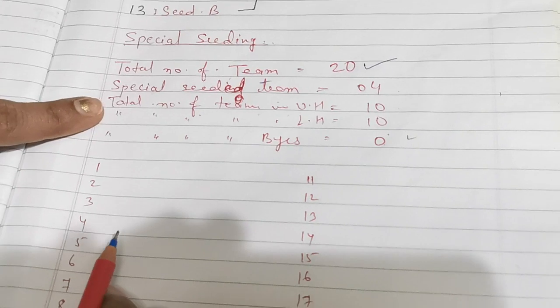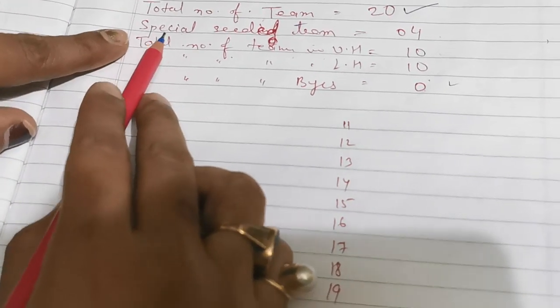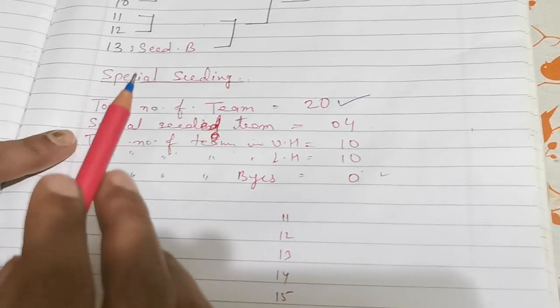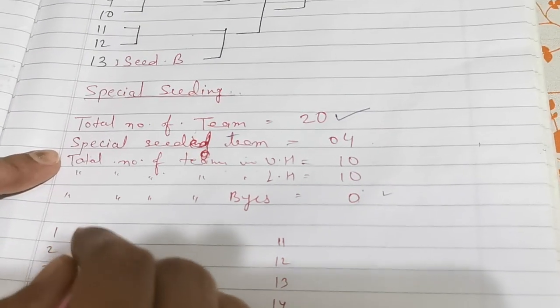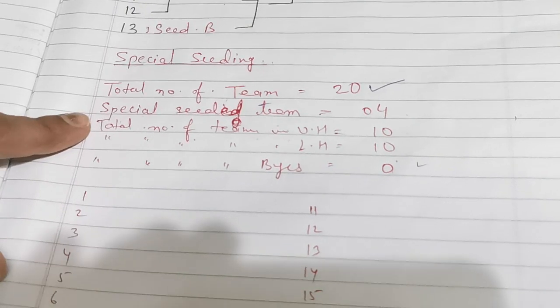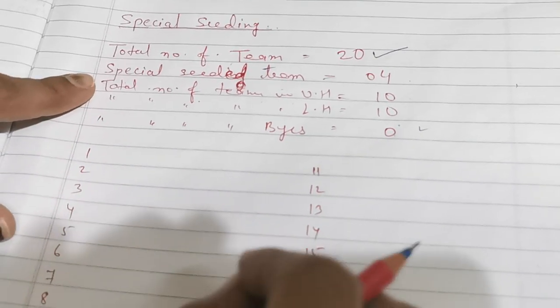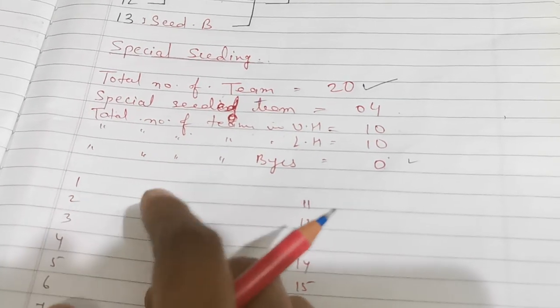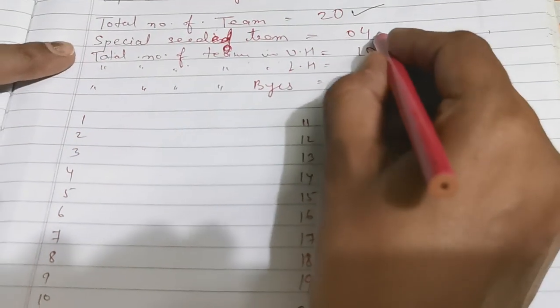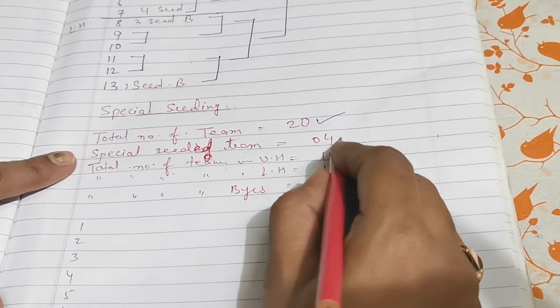Because as per the rule, special seeded teams will directly start from the quarter final and semi-final. It means when we will give the bye, that time we should not add the special seeded team. So it means four teams are the special seeded teams, 20 minus 4 is equal to 16.